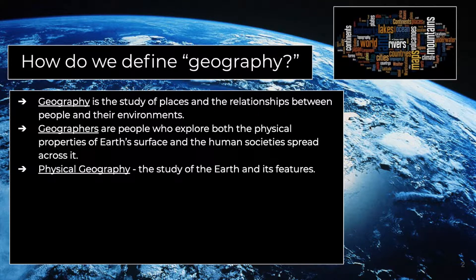Physical geography is the study of the earth and its features. When we're talking about physical geography, we're talking about the land itself, though we can also be studying oceans and bodies of water. When discussing physical geography, we're not talking about people — we're simply talking about the land, the water, and the nature of the earth's surface.